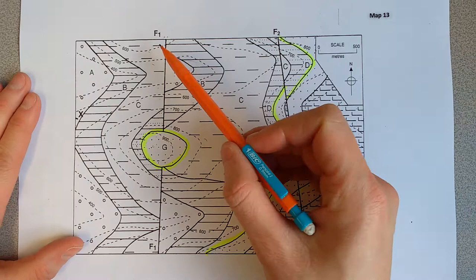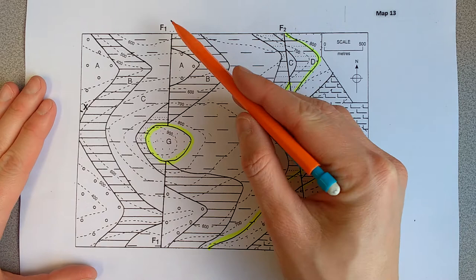You can see that we've got these two straight lines cutting across our map. These are labeled F1 and F2. Now these are faults.